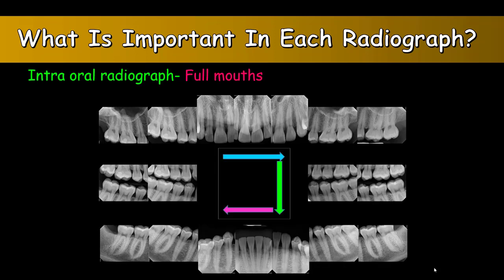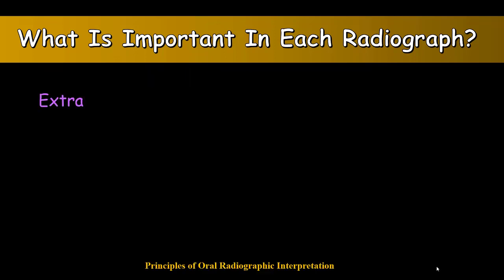For the intraoral radiographs of a full mouth of a patient, where I have a lot of periapical radiographs and four bitewings of the patient, I have to have a sequence or a path so I won't miss any part. I can start from the upper right side of the patient towards the upper left, and then I'll come down to the mandibular part and start from the left towards the right, and then I'll look at the bitewings. This sequence will help you not to miss any part.